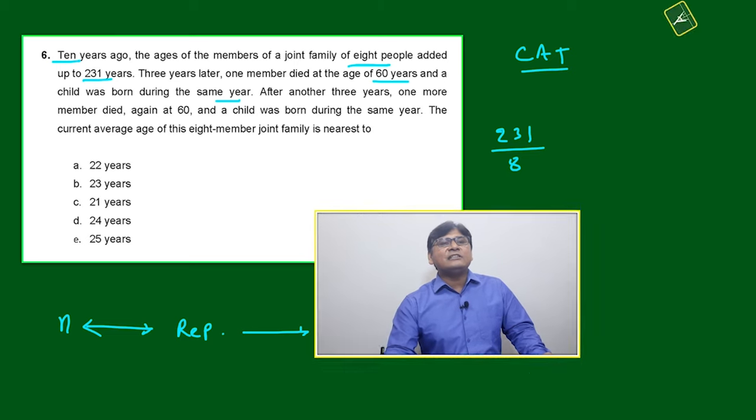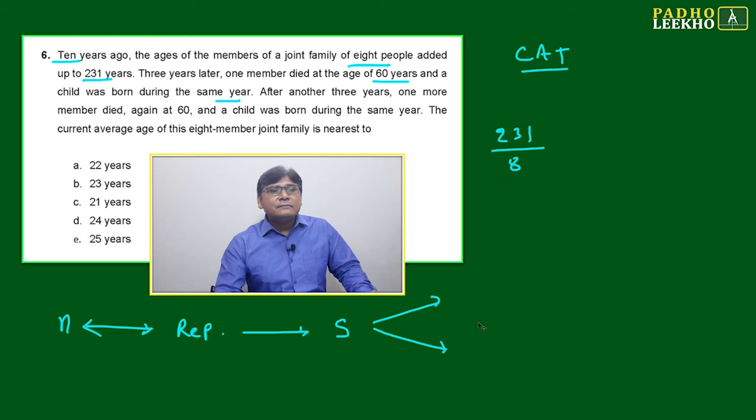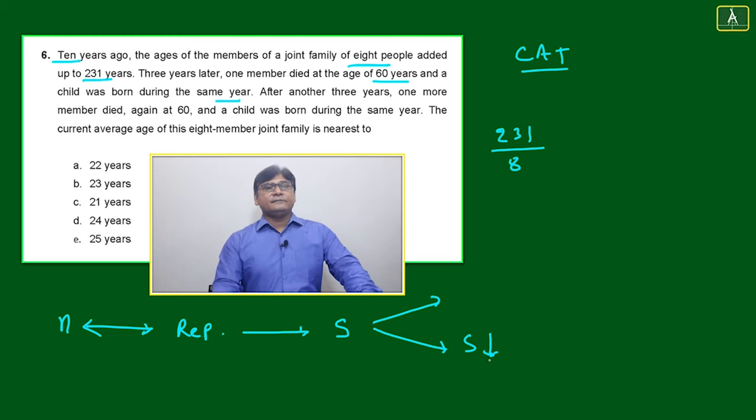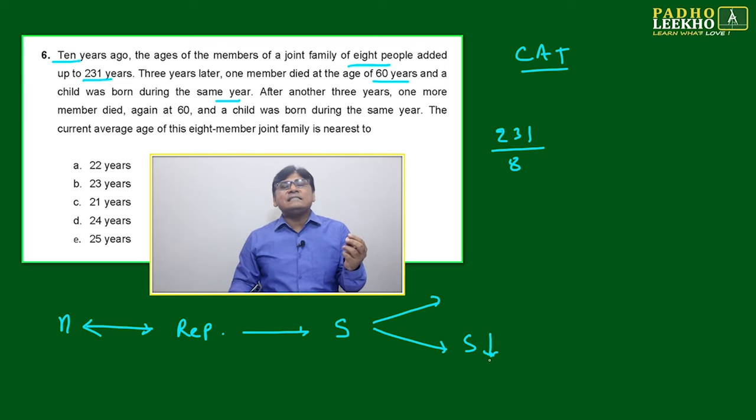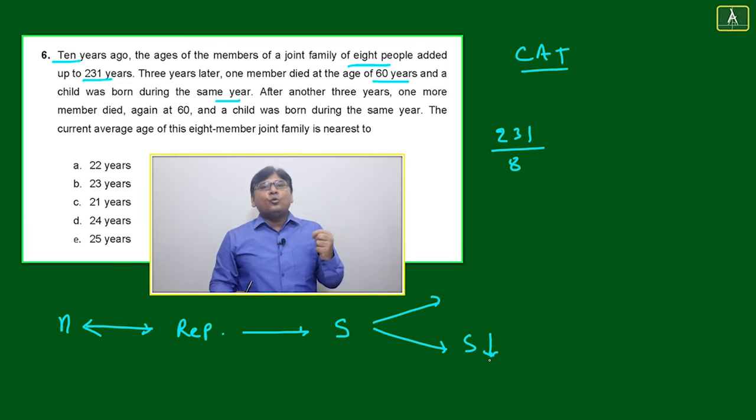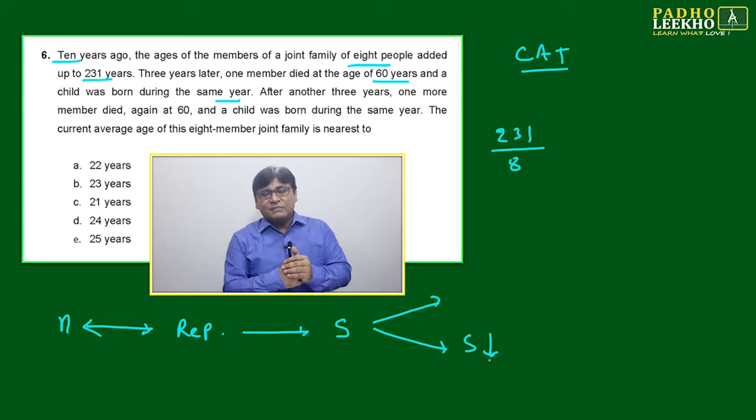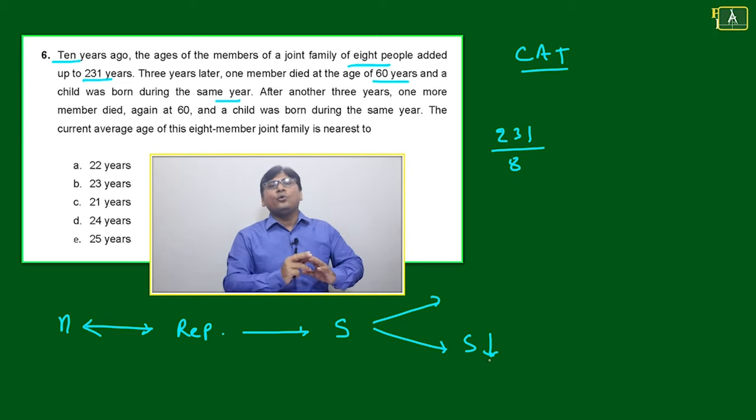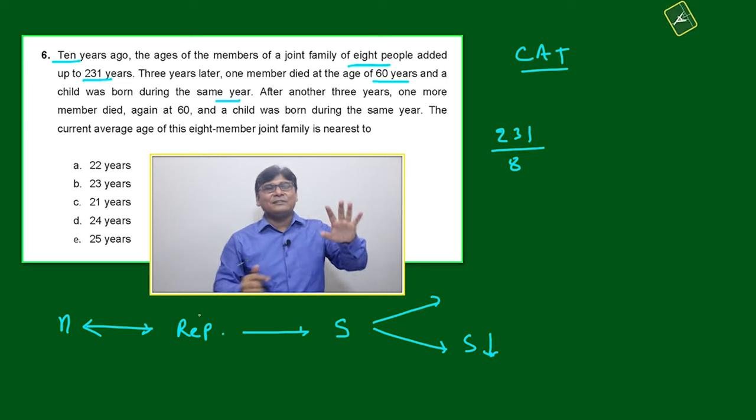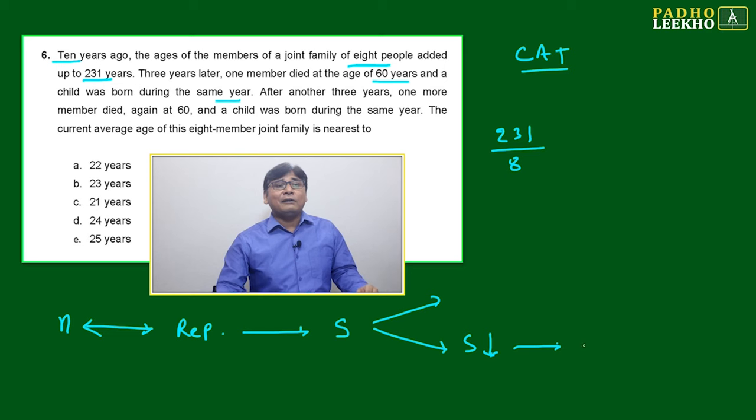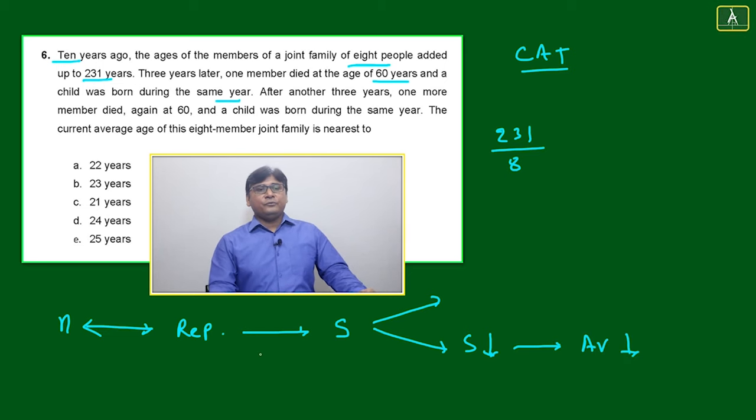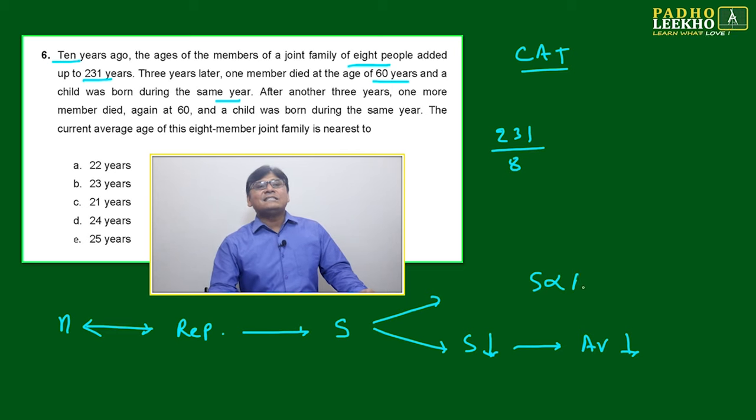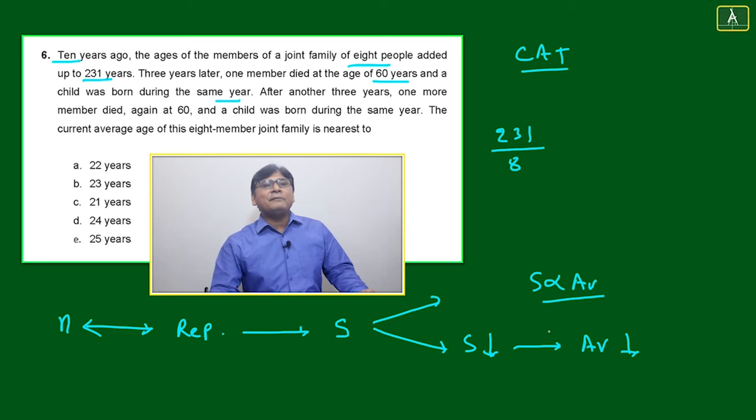S can increase or S can decrease. Here S will decrease because who is going out is 60 years old, who is taking birth is zero years. Means 60 years you are losing from the sum total. You are losing 60, you are getting zero - it's a loss, sum is decreasing. When n is constant and sum goes down, average will also go down. If n is constant, sum will be directly proportional to average.